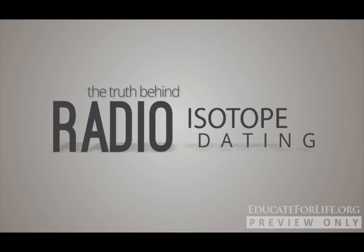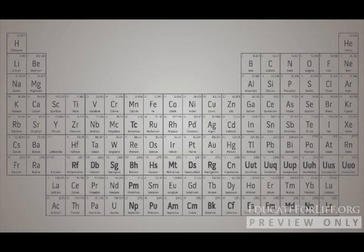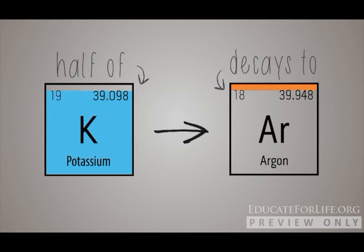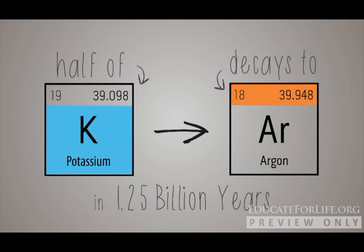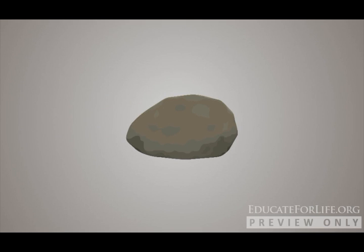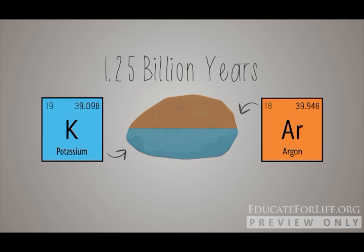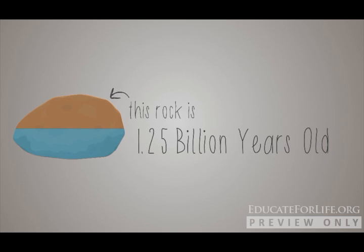If you pick up the right kind of rock — say an igneous rock containing potassium — potassium is an unstable element that decays to argon at a very slow rate. If you pick up the rock, measure the potassium, measure the argon, and you know the rate at which one decays to the other, you can date the rock. It's pretty simple to understand.